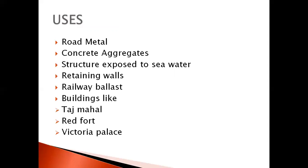Next, we will see the uses of rocks. Rocks are used in road metals — when constructing a road, small stone pieces are used, known as road metals. The next use is concrete aggregates — in concrete, the coarse aggregate is most probably stone. The third use is in structures exposed to seawater, as rock can resist it well. The fourth use is retaining walls — a wall-like structure made with rock to retain soil.